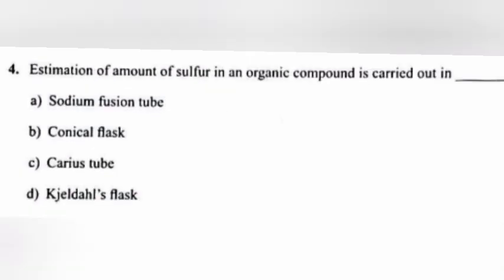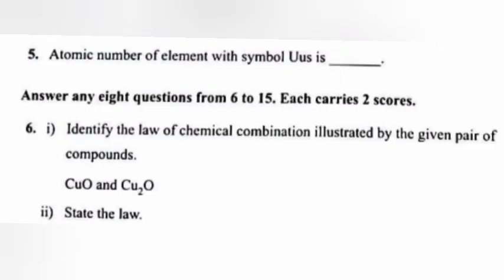Question 4: Estimation of amount of sulfur in an organic compound is carried out in? Answer: Carius tube. Question 5: Atomic number of element with symbol UUS is? Answer: 117.